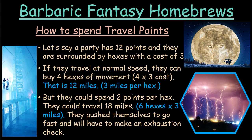Let's say a party has 12 points and they're surrounded by hexes with a cost of three. They can travel at normal speed, spending three points per hex. That buys them four hexes of movement — four hexes times three cost equals 12 points, and since each hex is three miles wide, they've traveled 12 miles. That's how far they can travel under normal conditions.